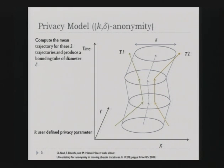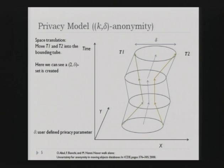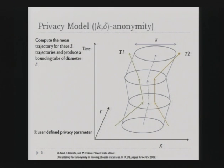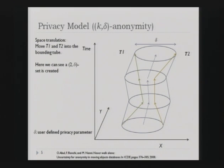The next step is space translation: we move anything outside of the bounding tube to inside the bounding tube. In this example, we actually move four points to form the 2-anonymity set. So here we can see that a 2-delta set is created.